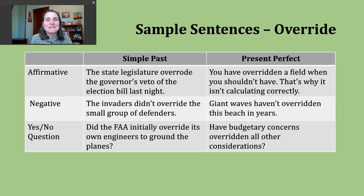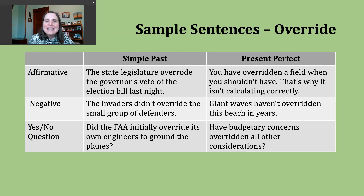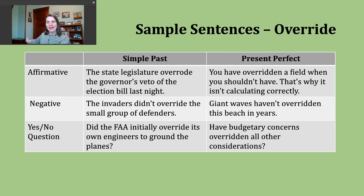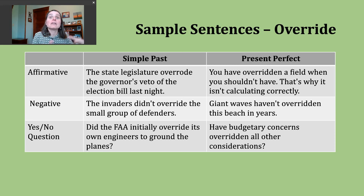Now let's take a look at negative present perfect sentences. Again, pay attention to your subject. If the subject is he, she, or it, use has not and then the participle form. But if the subject is I, you, we, or they, use have not and then the participle form. Here's another example: Giant waves haven't overridden the beach in years. So we've got a negative action — something that hasn't occurred, continuing from the past into the present. This would be like that spread over definition — you can imagine waves really moving further inland.